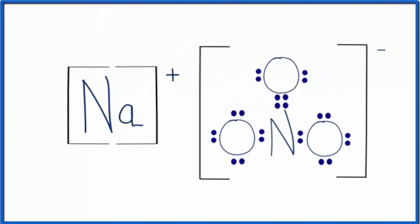So this is the Lewis structure for NaNO3. You just need to realize that it is an ionic compound, and we have to do it a little bit differently with the charges.